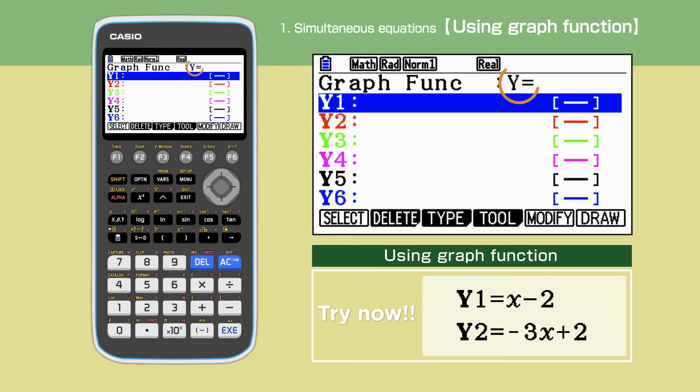Check that the graph function shows Y equals, then enter both equations in the calculator. Again, X needs to be entered using the X theta T key and the bracket minus key for negative numbers.